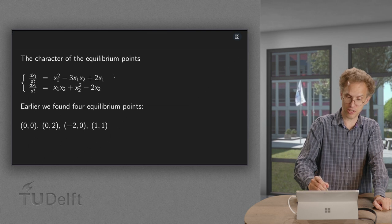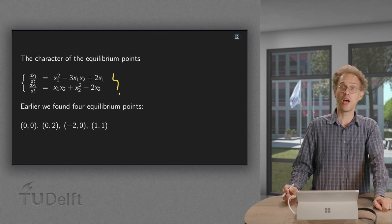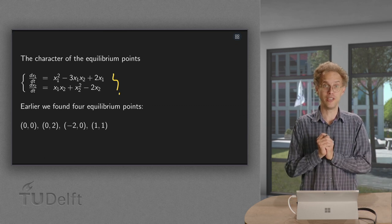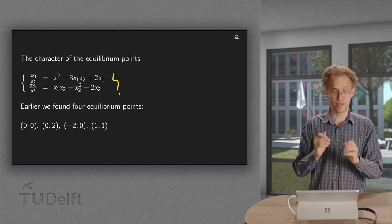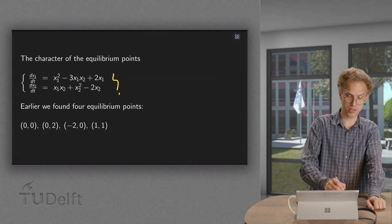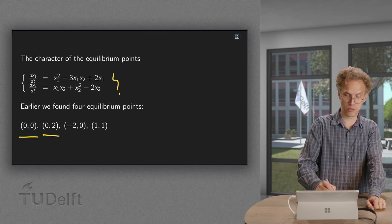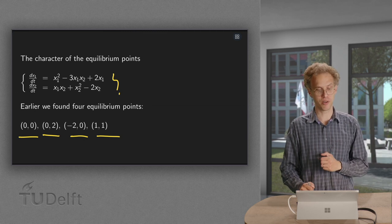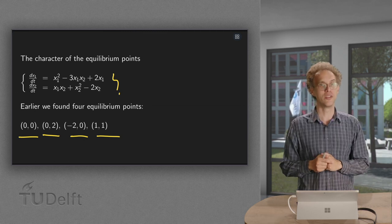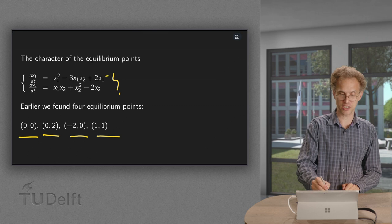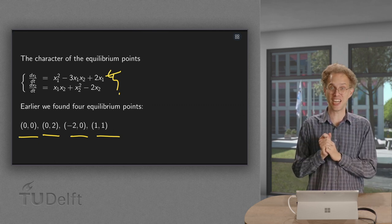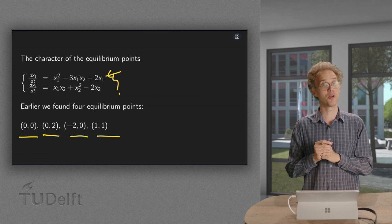We have this non-linear system over here which we have studied before. Earlier we already determined the equilibrium points. We found four equilibrium points: (0,0), (0,2), (-2,0), (1,1). In case you missed the previous video on that, just plug in the numbers into the right hand side and you will see you will get (0,0) all the time, so you can easily check whether you have an equilibrium point or not.